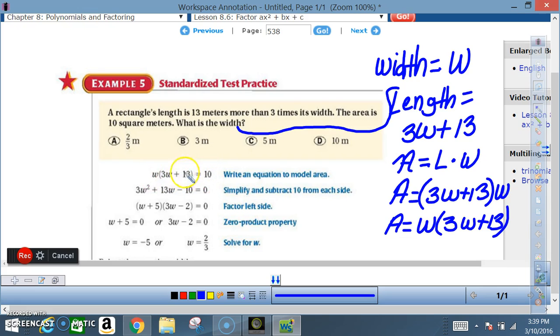All right, we're gonna do two things at one time here. First, we're gonna apply the distributive property. w times 3w is 3w squared, w times 13 is 13w, and that minus 10 comes about because don't forget we got to say minus 10 here and minus 10 on that side. That's how that 10 gets over...